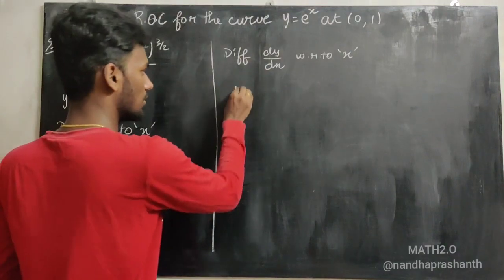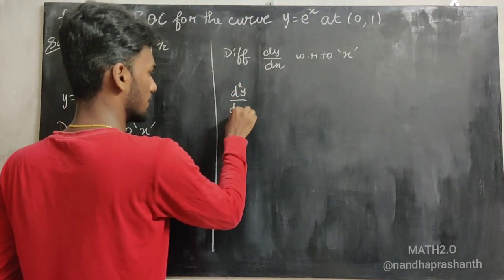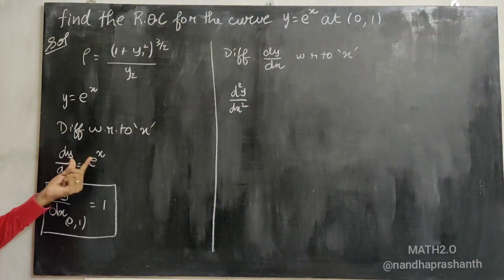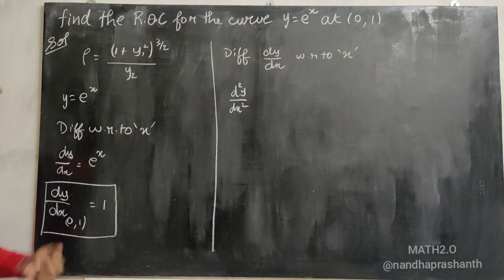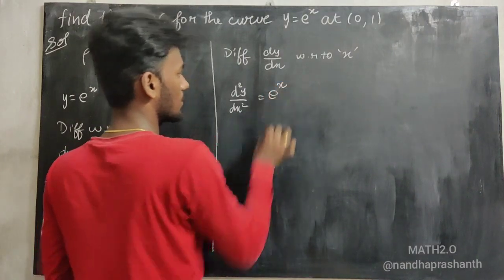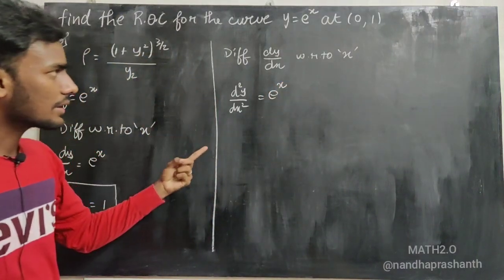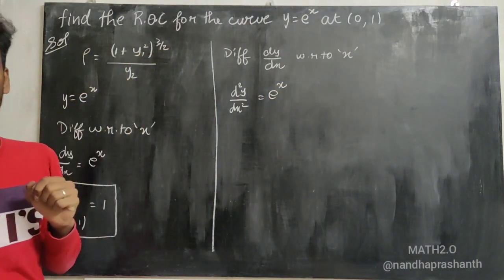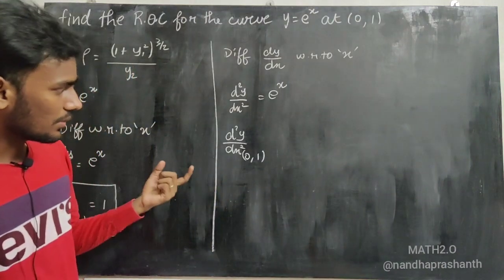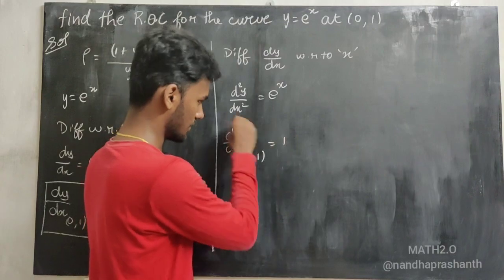For the second derivative, we differentiate dy/dx again with respect to x. d²y/dx² is again eˣ, which equals eˣ. At (0, 1), d²y/dx² = e⁰ = 1. So y₂ equals 1.